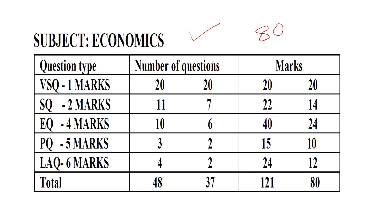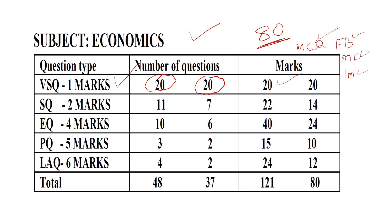80 marks is the question paper pattern. For the mid-term exam, we will talk about the blueprint questions. We will talk about 20 questions. There is no choice, so 20 and 20. We will prepare MCQ, fill in the blanks, and match the following — 20 questions, 1 mark each. Every one is 5-5, so the total is 20 marks.